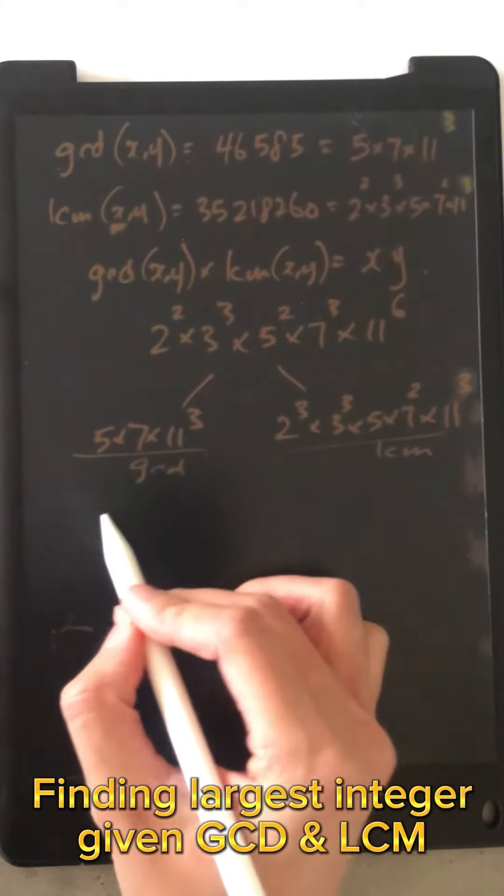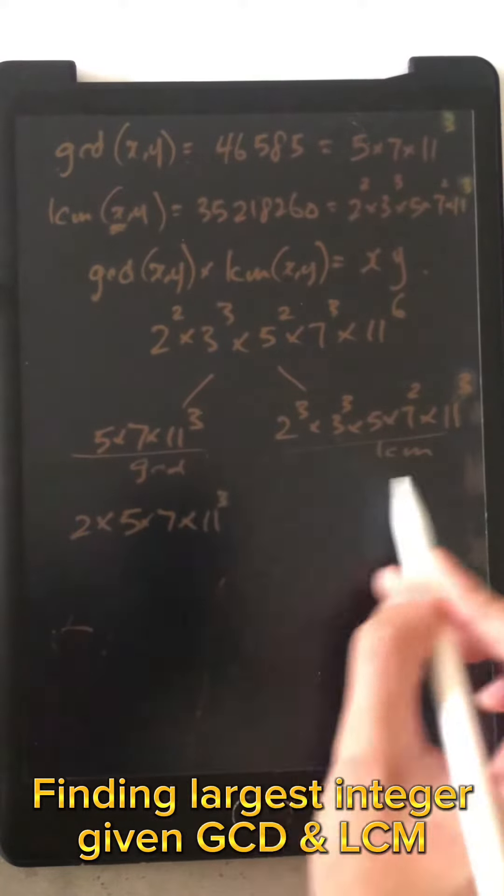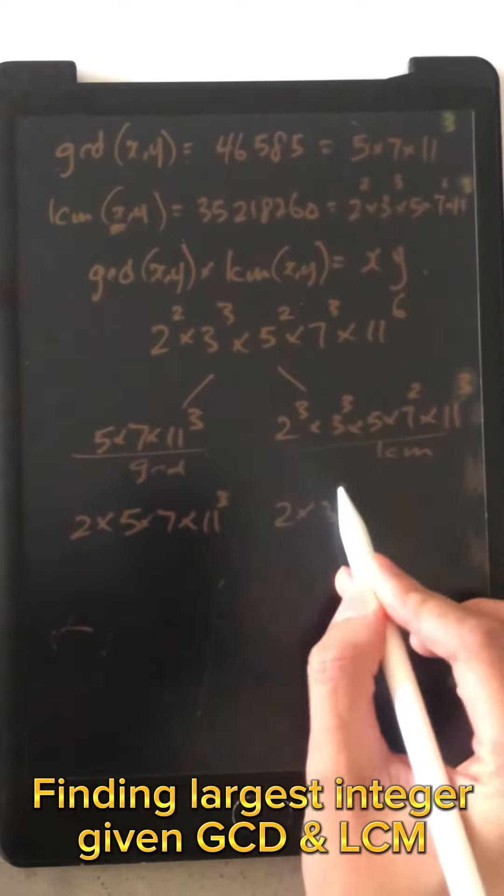So the next one would be 2 times 5 times 7 times 11 cubed, and the larger one would be 2 times 3 cubed, and so on.